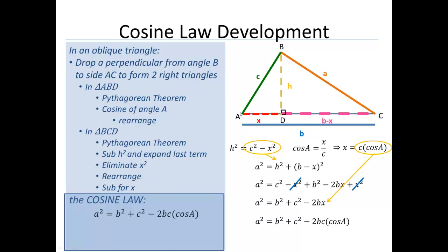Again, same as before for the sine law. Just drop a perpendicular from A to side A or C to side C. And we'll get the other two versions of the cosine law.